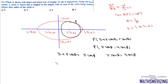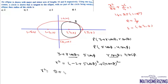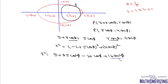Eliminating θ: r² cos²θ + r² sin²θ = r², giving r² = (5 cosφ - 3)² + (4 sinφ)². Expanding: r² = 25 cos²φ - 30 cosφ + 9 + 16 sin²φ. Since 16 sin²φ + 16 cos²φ = 16, we get r² = 9 cos²φ - 30 cosφ + 25.